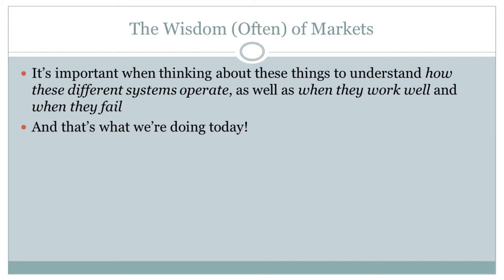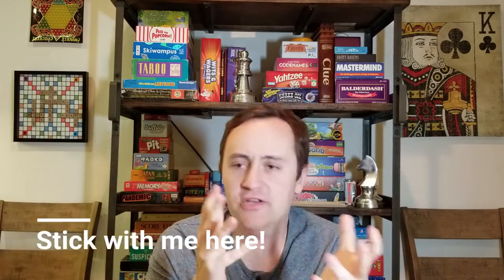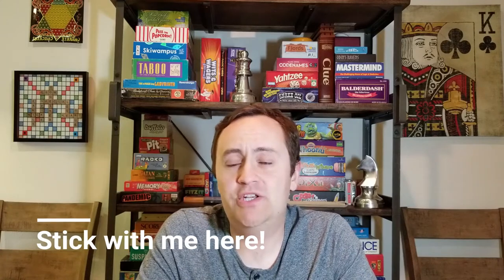So it's going to be important to think about how these different ways of answering this very important question operate. What are they going to do well? When are they going to do well, and when are they going to do poorly? And in what sorts of contexts are they going to do well or poorly? We're going to come down to the conclusion that markets tend to be a really good way to decide what stuff gets made and how it gets allocated, and we're going to go through all of the reasons why that is the case.